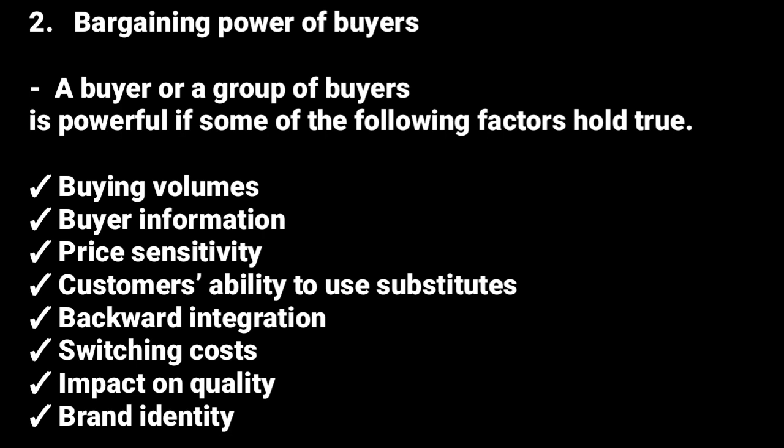Another force is the bargaining power of buyers. Buyers can affect the industry by forcing prices to go down — if they over-bargain, you can tell a customer a product is 10,000 and they will say they have 5,000, and when you really want to make a sale you have to reduce the price. A buyer group is powerful if some of the following factors hold true. First is buying volume — if a customer buys in large quantities, you will be required to reduce prices.